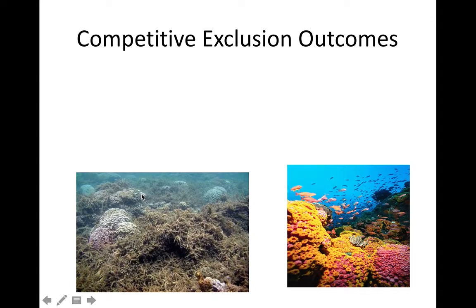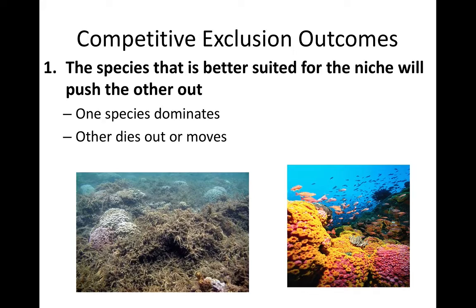So, competitive exclusion outcomes. The first one is what we just discussed: one species is better suited and the other one gets pushed out — it dies or it moves. That's like the example with the coral. The algae wins, the coral loses, and everything turns into this wasteland covered by algae.